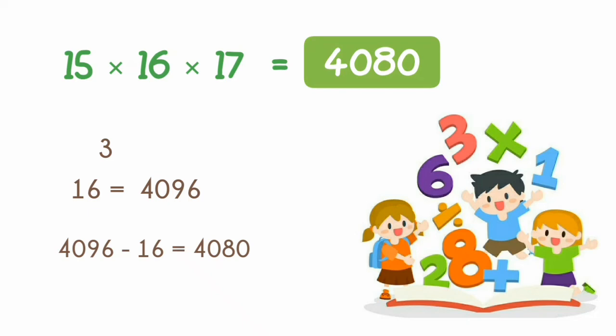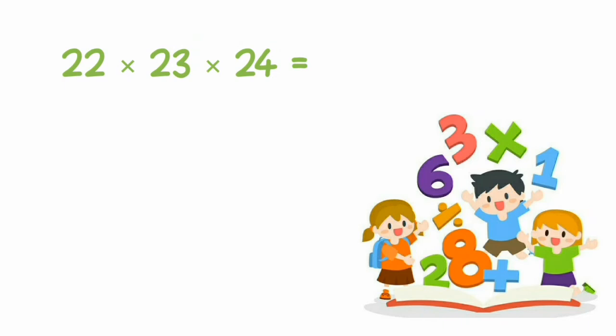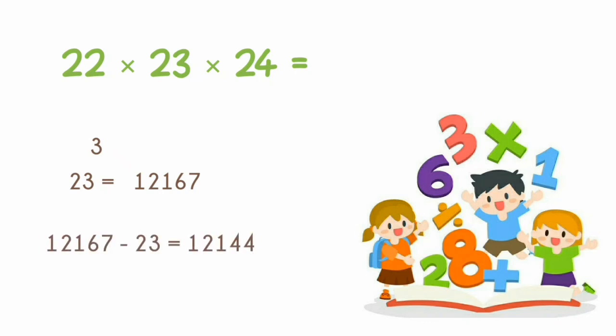Let's take another example of three synchronized numbers: 22 multiplied by 23 multiplied by 24. The second largest number, which is 23 — we have to cube the number and subtract the same number. The answer is 12144.